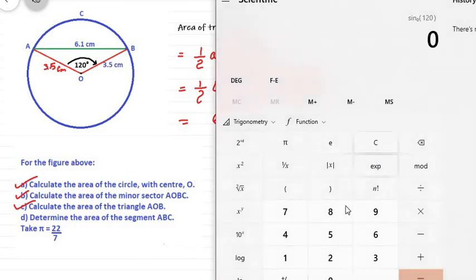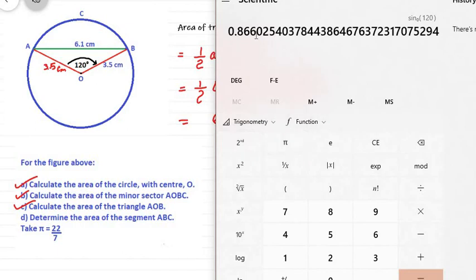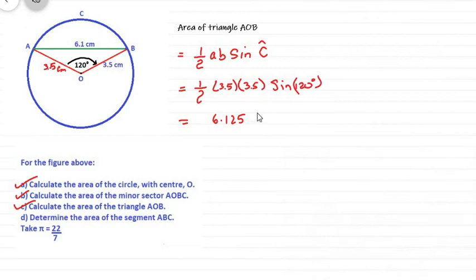So, you need to work this out using our calculators. Ensure your calculator is in degrees. And so, 6.125 will be multiplied by sine of 120. We just press sine, and this is actually 0.866. That will give us a value of 0.866. Multiplying these, we'll get approximately 5.304 centimeters squared. We'll use 3 significant figures. That will be 5.30 centimeters squared. So that will be your answer for the area of the triangle.